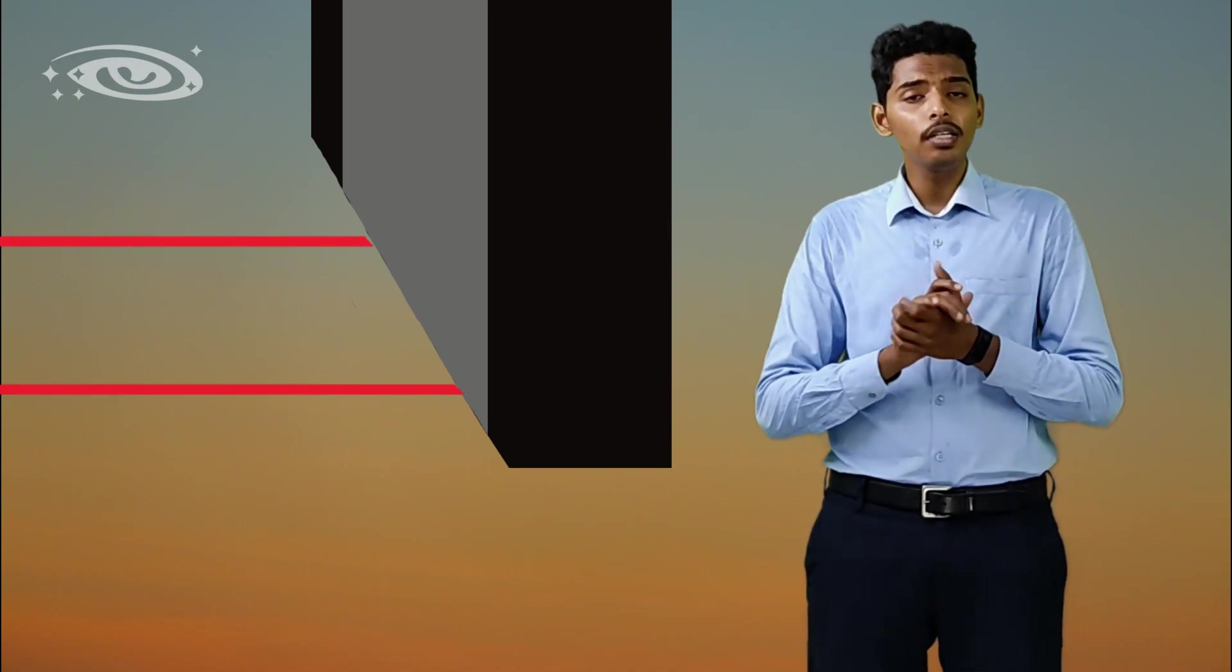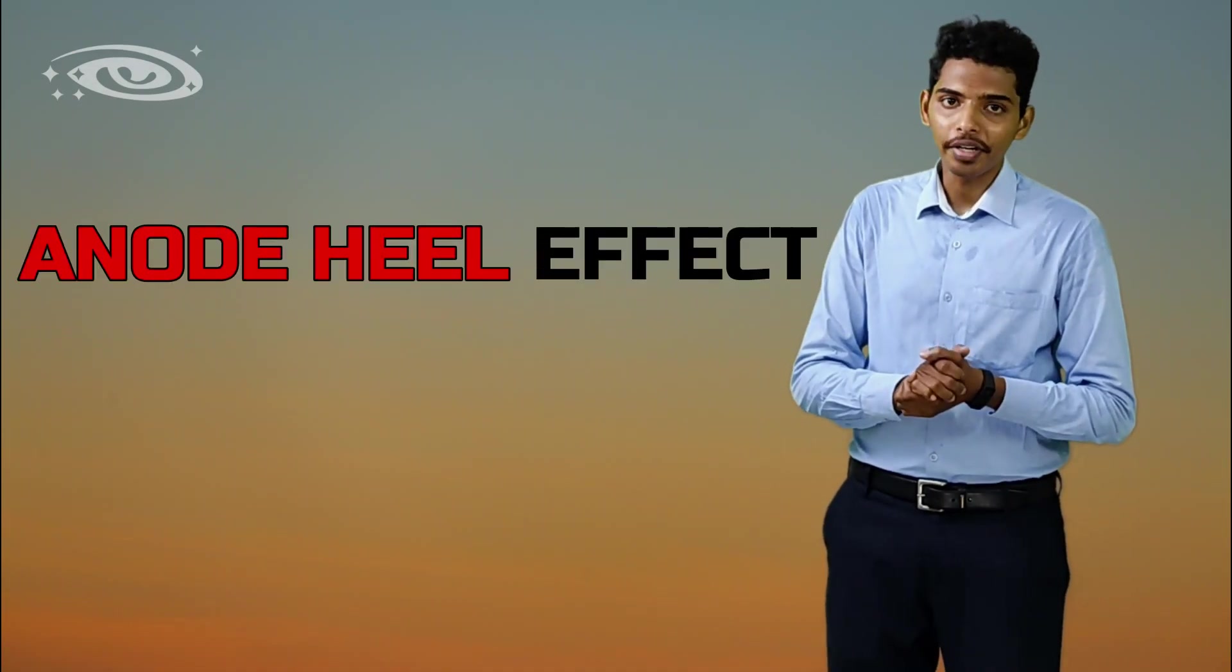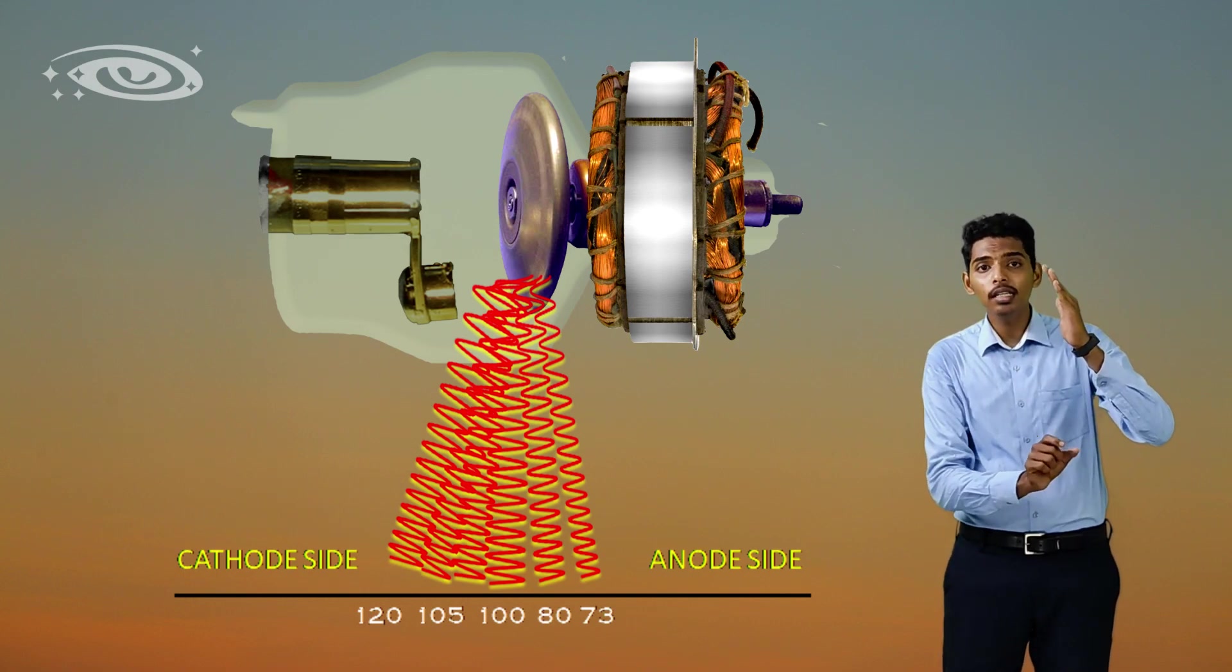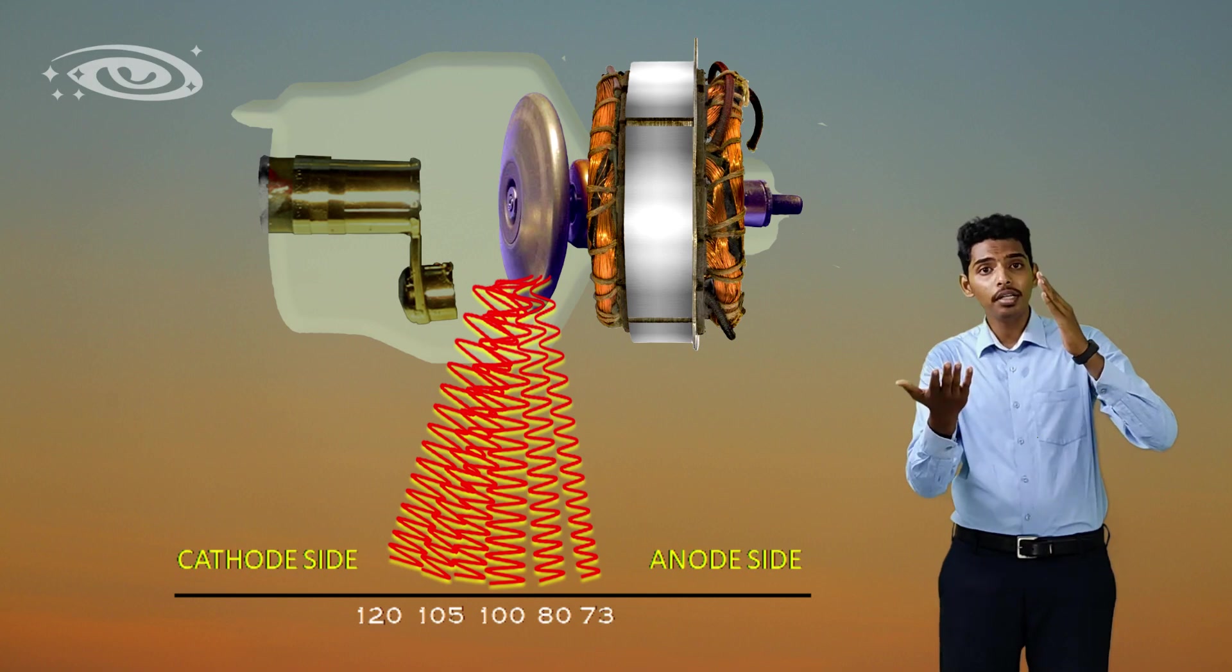Even though this principle is very useful, we have one disadvantage in this line focus principle, that is called anode heel effect. The x-ray beam which is produced at the anode side have less intensity, but x-ray beam which is produced at the cathode side have more intensity.